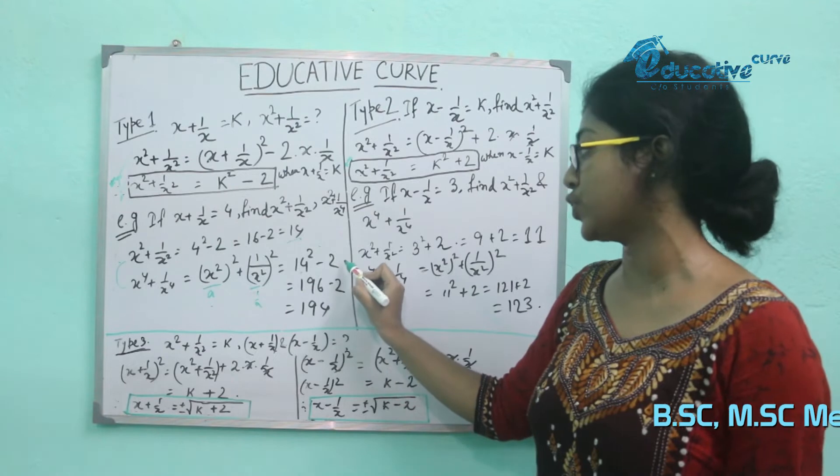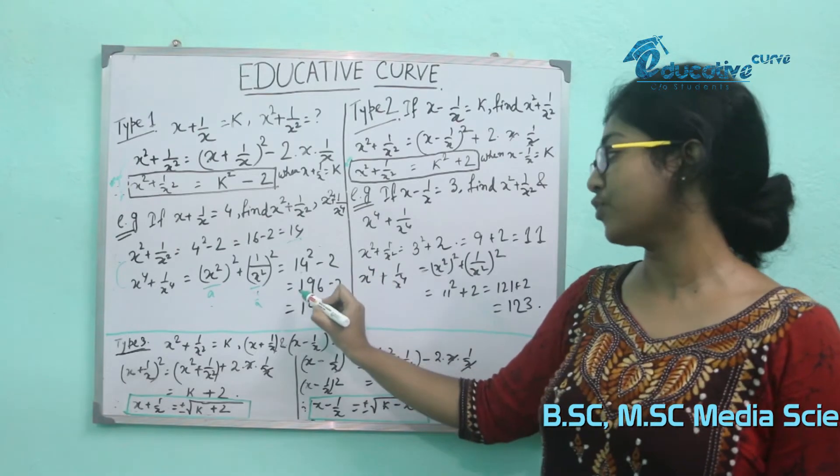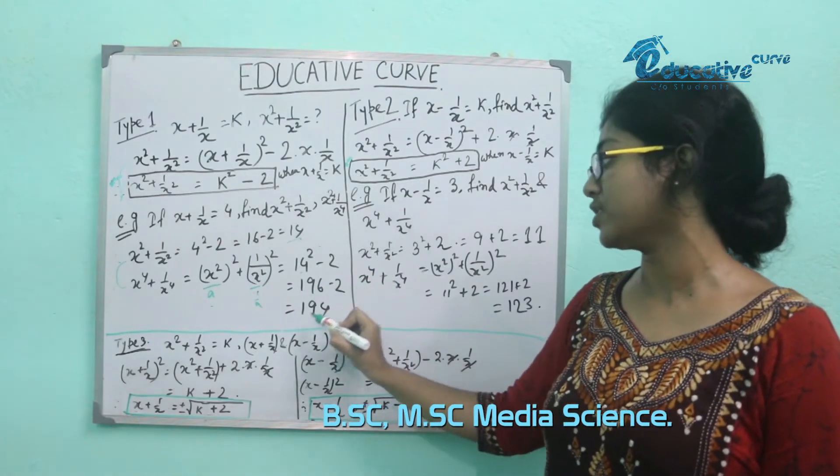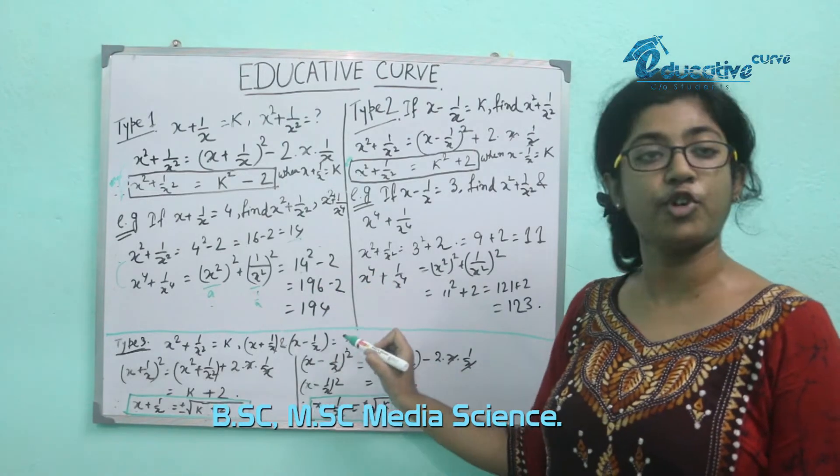x squared minus 2 equals 1 by x squared in the curve. That is, x squared minus 2 is equal to 194.